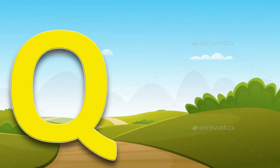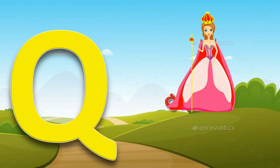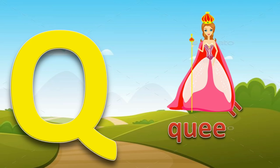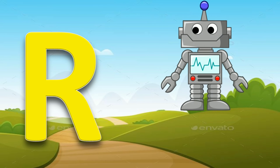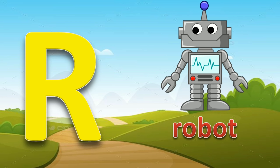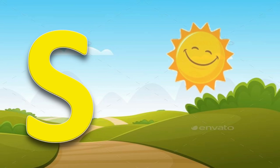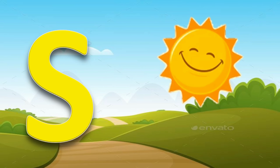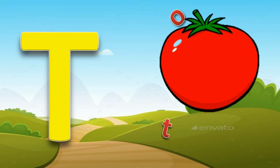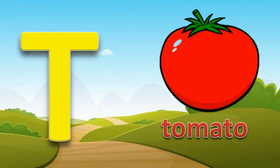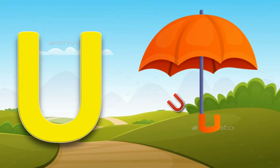Q for queen. R for robot. S for sun. T for tomato. U for umbrella.